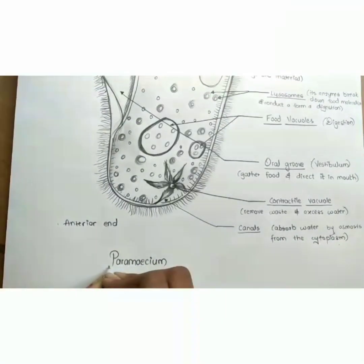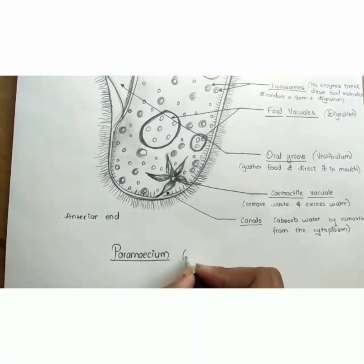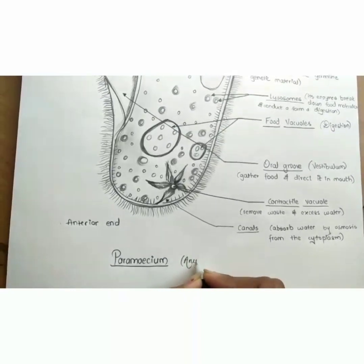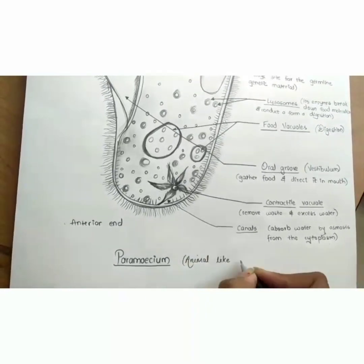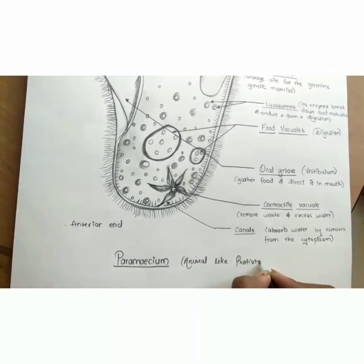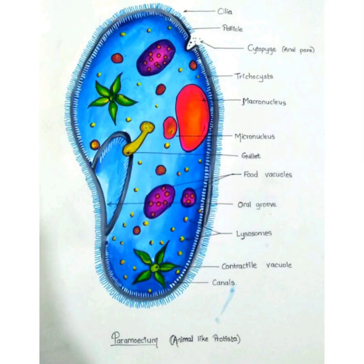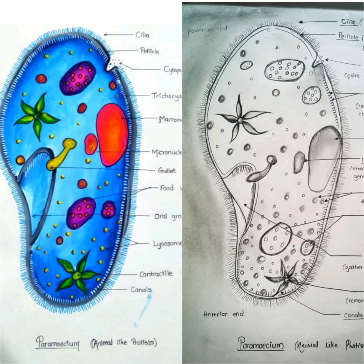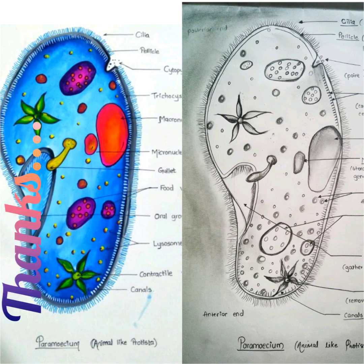So this is done with the paramecium — an example of animal-like protista. I have colored this diagram to understand it better. So this is done. Thank you friends for watching my video — please like, share, and subscribe.